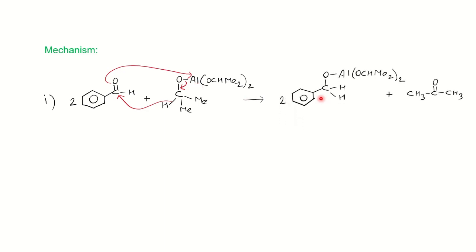The hydrogen is transferred to the carbonyl carbon, and the oxygen forms a bond with Al(OCHMe₂)₂. The isopropoxide group is oxidized to acetone. With the loss of acetone, the intermediate molecule is formed. As described, the polar Al–O bond facilitates electron transfer to the C=O bond, so the hydrogen attached to the isopropoxide carbon moves to the carbonyl carbon, followed by release of electrons from oxygen to aluminium, forming another polar Al–O bond.